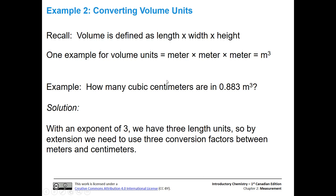We're also going to remind ourselves that volume is defined as length times width times height. Now we're going to have multiple meter units — meter times meter times meter to give us meter cubed. So our question here is, how many cubic centimeters are there in 0.883 meters cubed? Now we have the exponent of three, which means we have three length units, so we need three conversion factors.